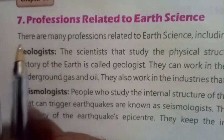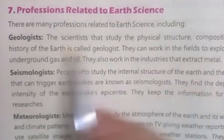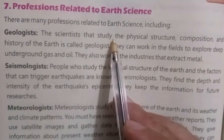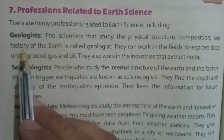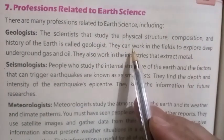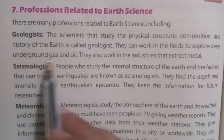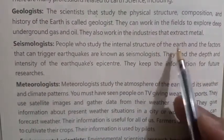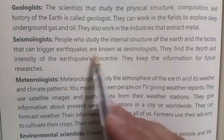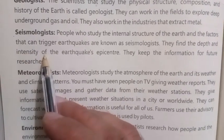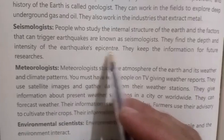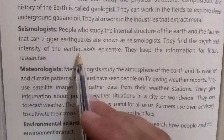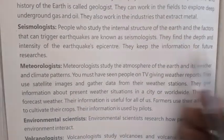Number seven: Professions related to earth science. There are many professions related to earth science, including geologists — scientists that study the physical structure, composition, and history of the earth. They can work in the field to explore deep underground gas and oil, and also work in industries that extract metal. People who study the internal structure of the earth and the factors that can trigger earthquakes are known as seismologists. They find the depth and intensity of the earthquake's epicenter and keep the information for future research.